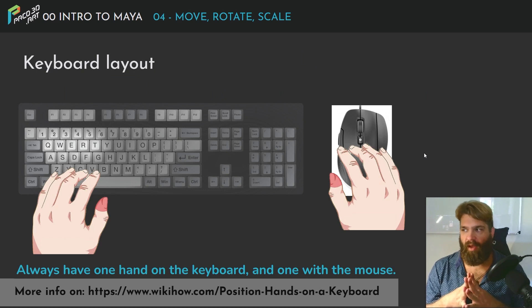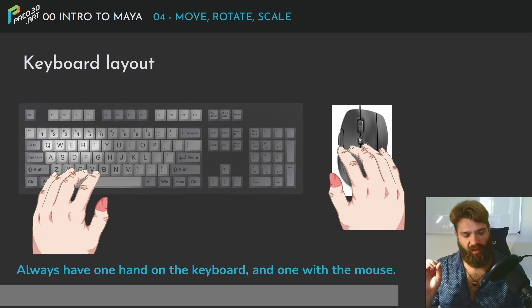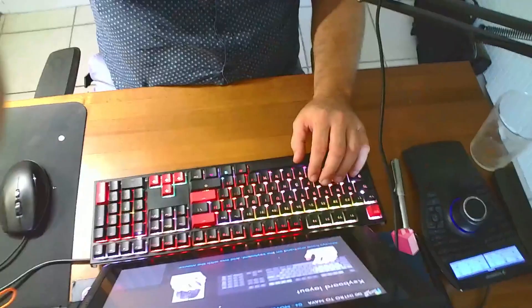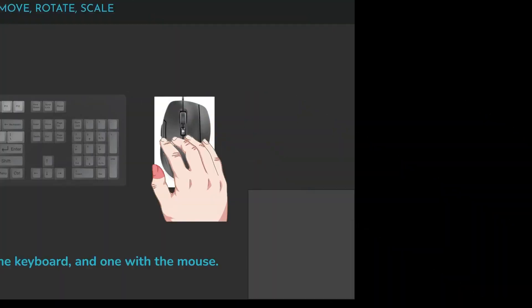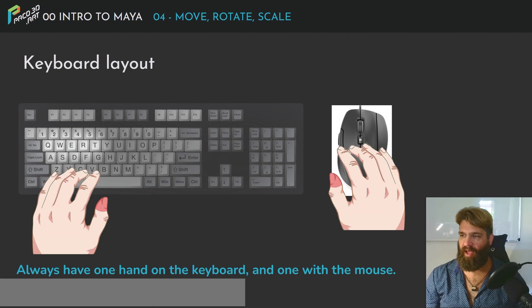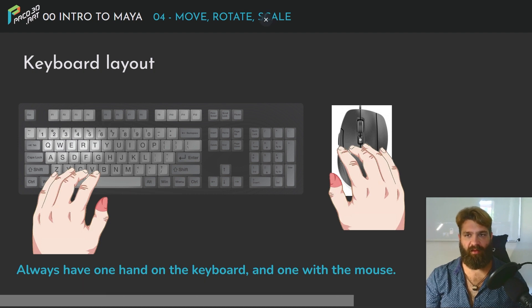So we are going to talk about the keyboard layout. You should always have one hand on the keyboard and one hand on the mouse. The left hand should always be on the left side of the keyboard, and the right hand on the mouse.